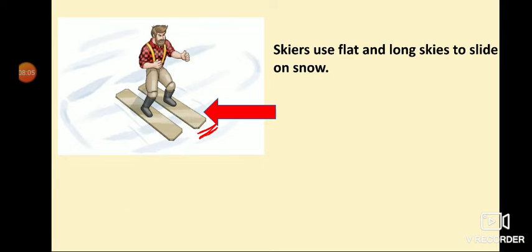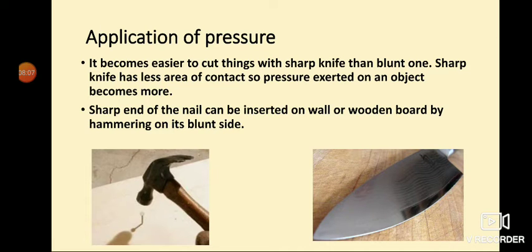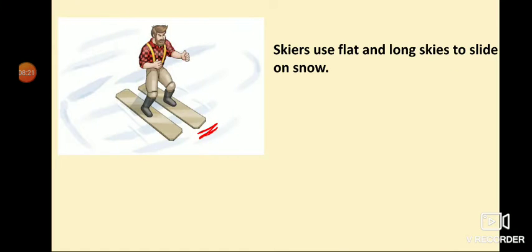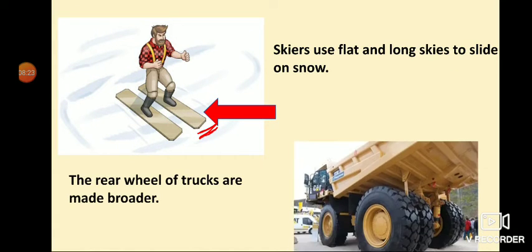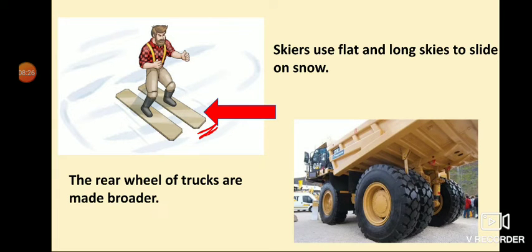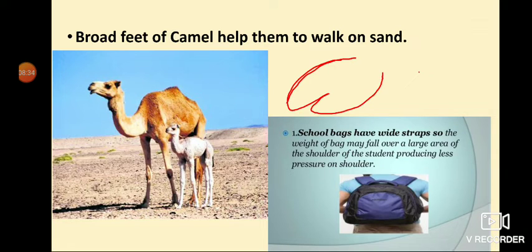These examples show applications where large area reduces pressure, and small surface area increases pressure, which is necessary in tools like knives and nails. According to the need, the surface area of objects is made sharp or flat — flat to reduce pressure on the ground, and sharp to concentrate force.